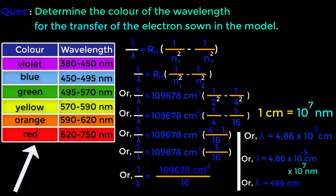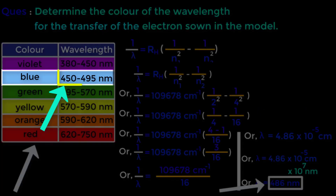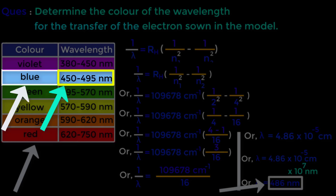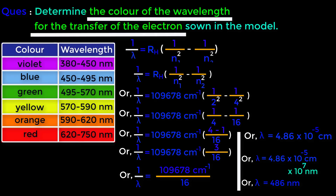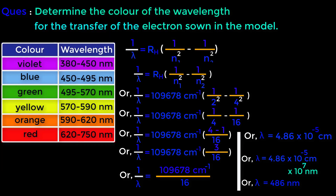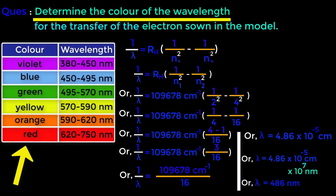Looking at the color chart, 486 nanometers falls in the range of 450 to 495 nanometers. In this range we get sky blue color. Therefore, the color of the wavelength for the transfer of the electron is sky blue. To determine the color of wavelengths, make sure to memorize this chart.